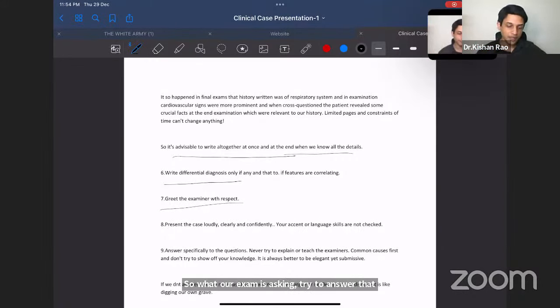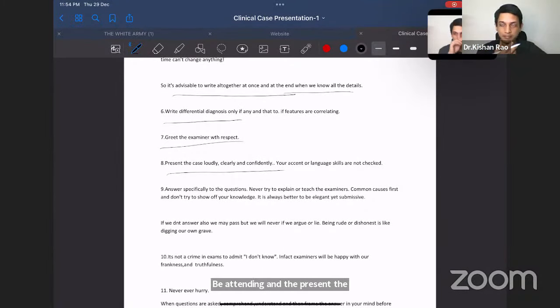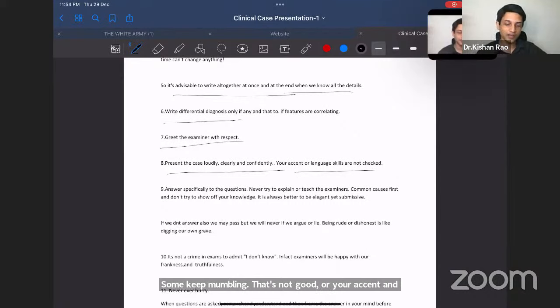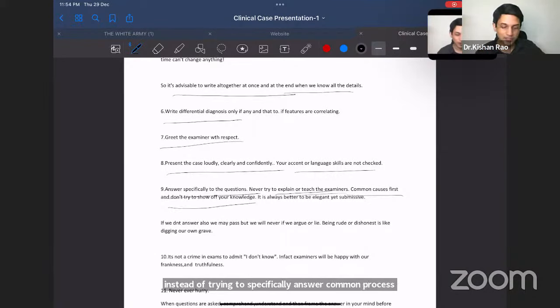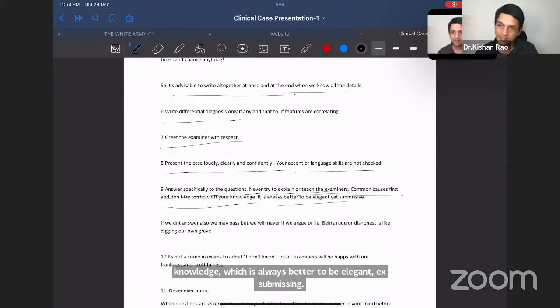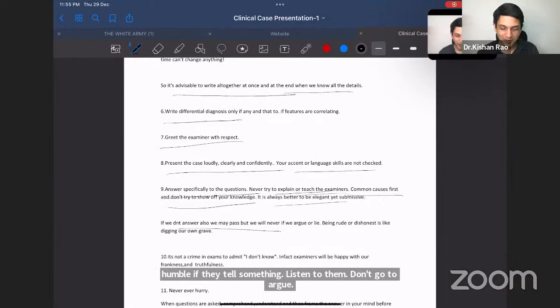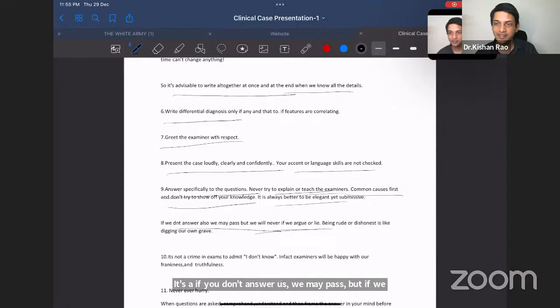Your accent and language skills are not checked, but how confidently you are presenting. How boldly, how clearly you are presenting. That's what really matters. Answer specifically to the questions. Never try to explain or teach the examiners. Many have this. They try to explain the things instead of trying to specifically answer. Common causes should be told first. Don't try to show off your knowledge. It's always better to be elegant and submissive. Be humble. If they tell something, listen to them. Don't go to argue. It's a, if you don't answer us, we may pass. But if we argue with the examiners, if you lie to them, then there's a meek possibility that you will pass. Being rude or dishonest is like digging our own grave. Please don't do that. It's not a crime in exams to admit. I don't know. If at all, I don't know. That's okay.